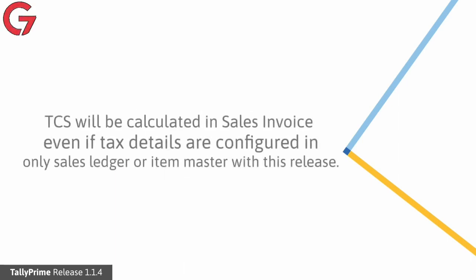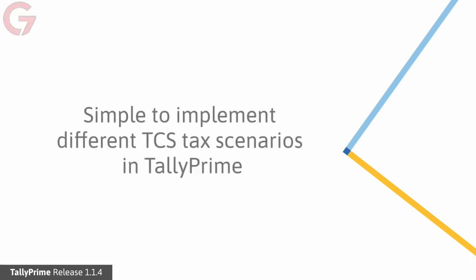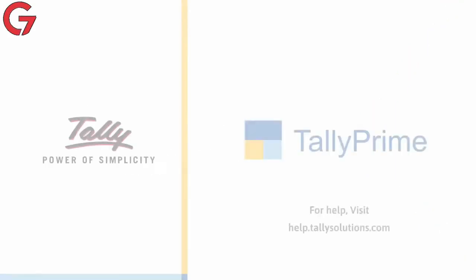In the earlier release, you had to define nature of goods both in sales ledger and stock items in order for the tax to be calculated in a sales invoice. Now, it is sufficient to define the nature of goods in any one master and tax will be calculated based on the details in that master. As we just witnessed, enabling TCS in TallyPrime is very simple, and implementing different calculation scenarios for various nature of goods under TCS is also made easy in TallyPrime. Thank you.